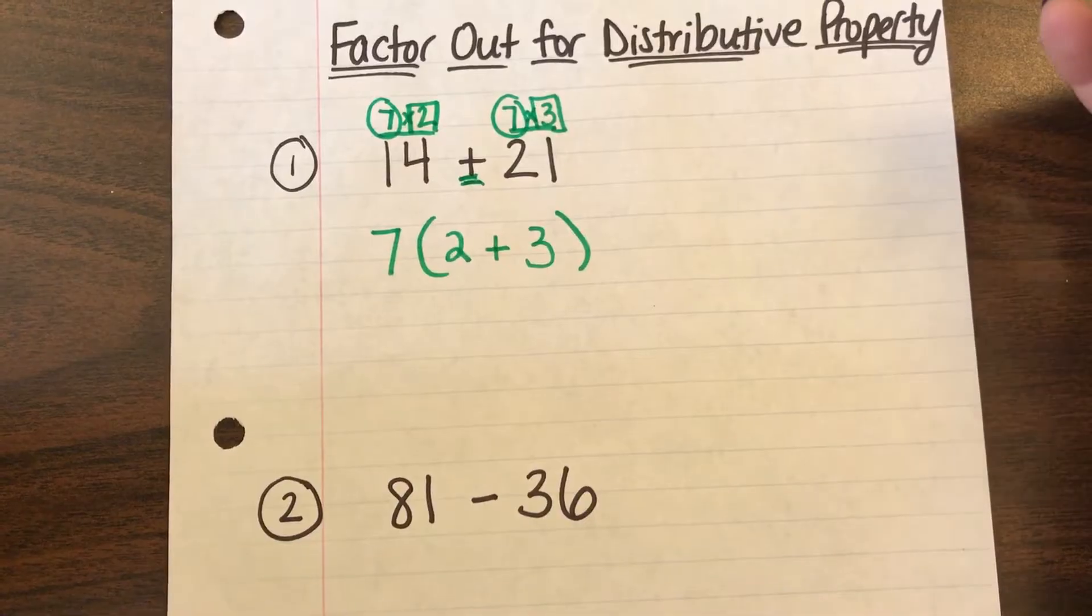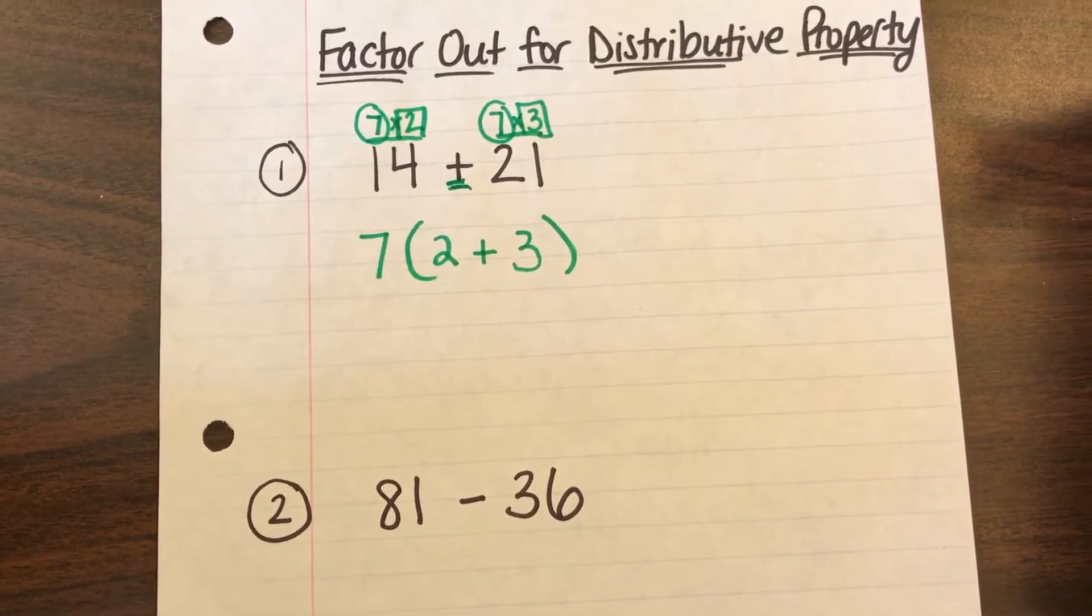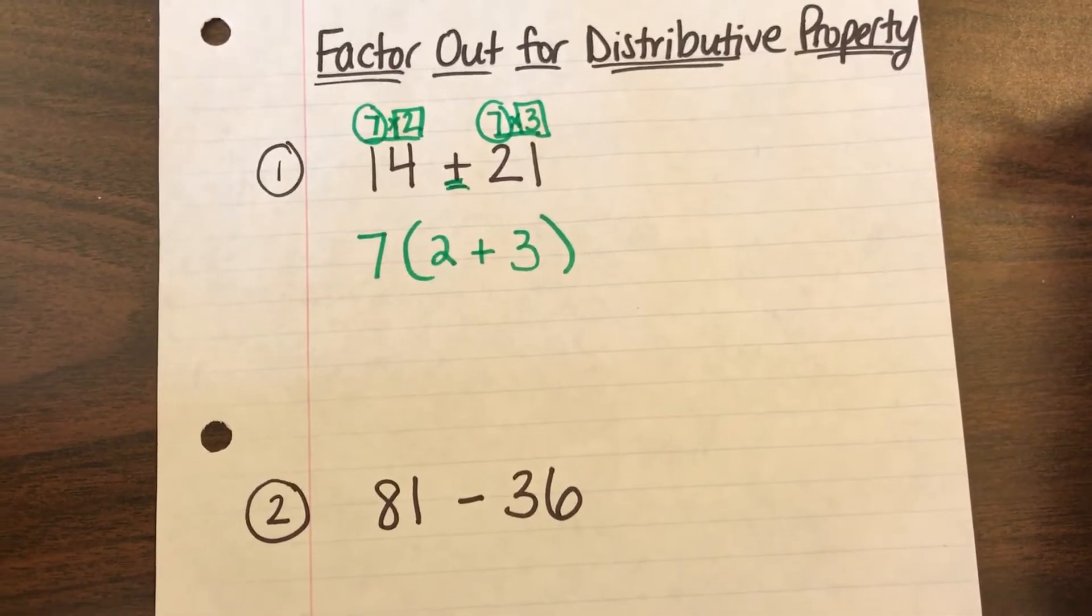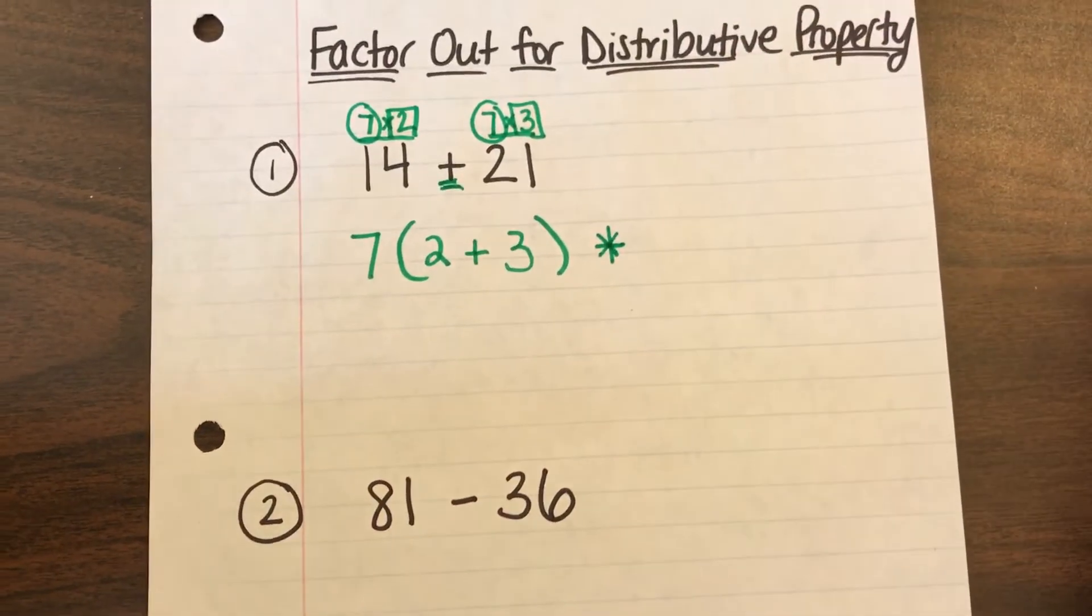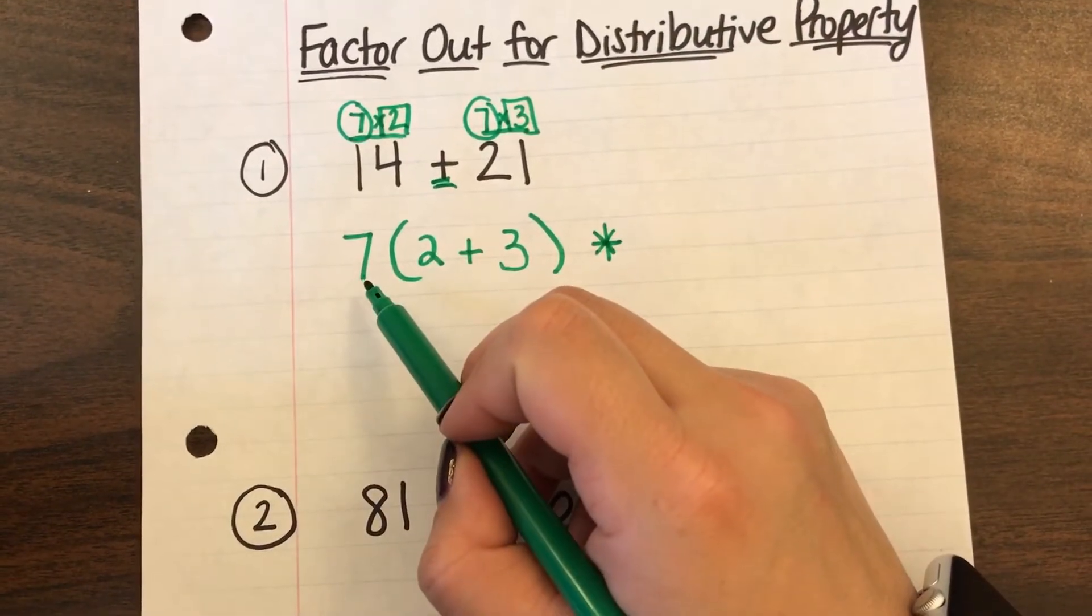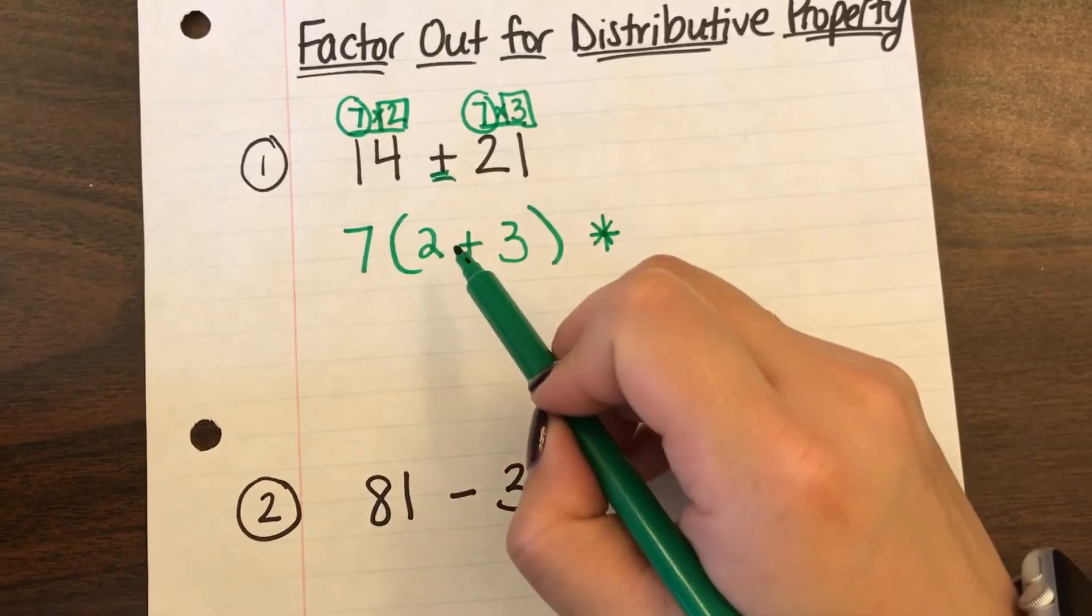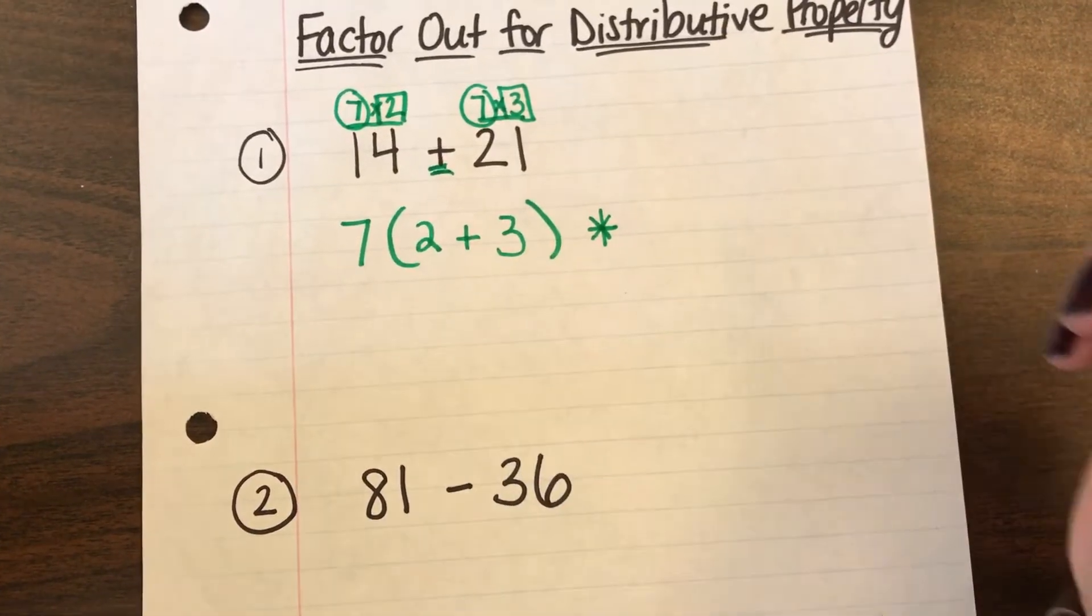And if it asked you to solve you could go ahead and solve it but really when we look for factoring out for distributive property this is what we're looking for here. Just the expression. So you have the number on the outside of the parenthesis house and then you have the two numbers 2 plus 3 on the inside.